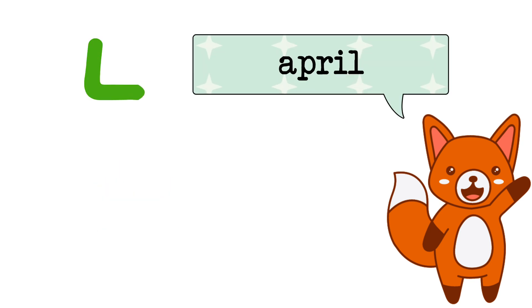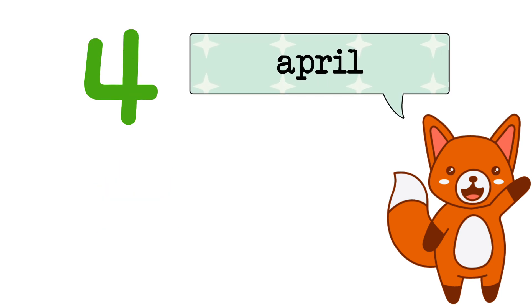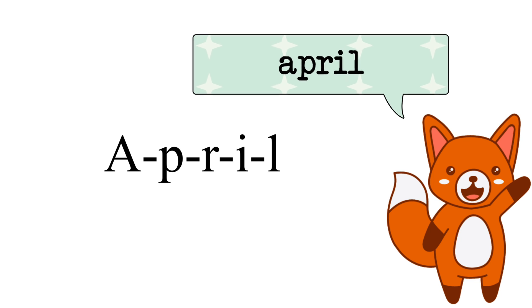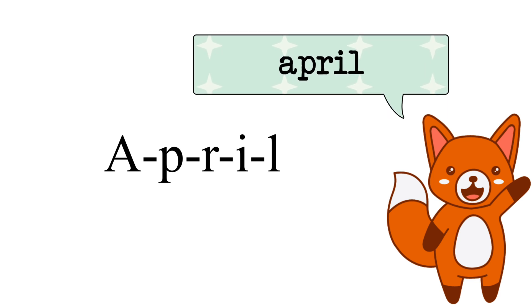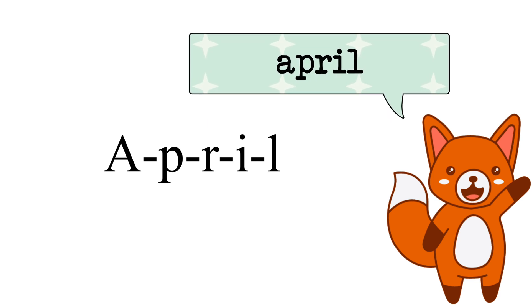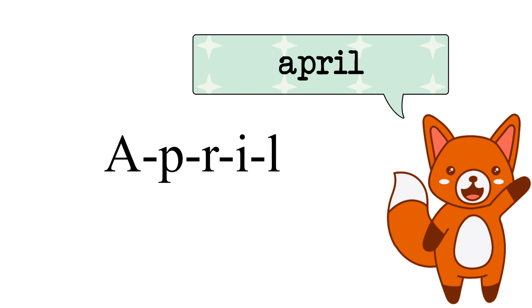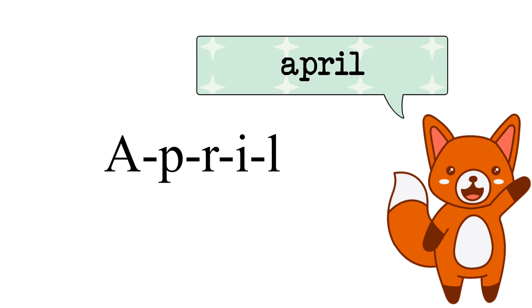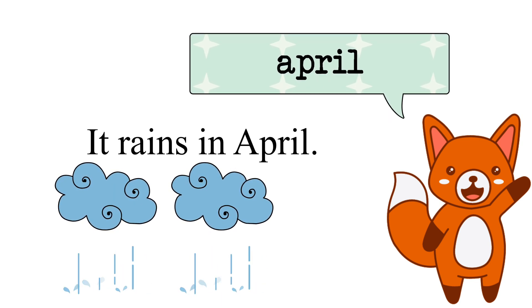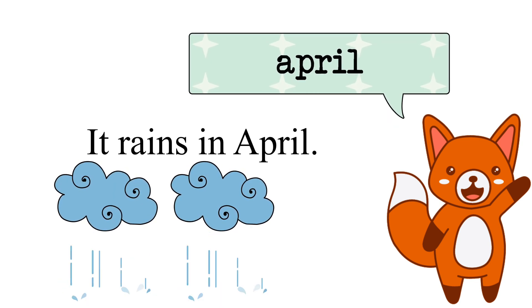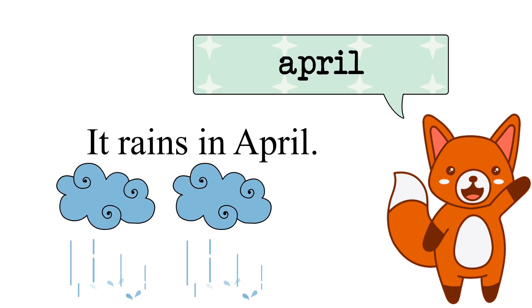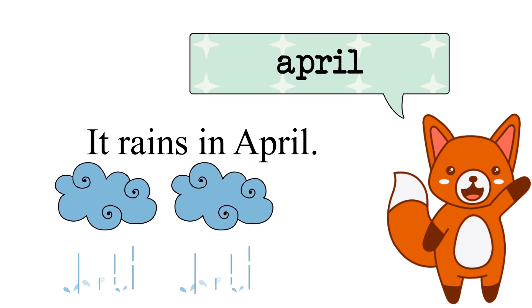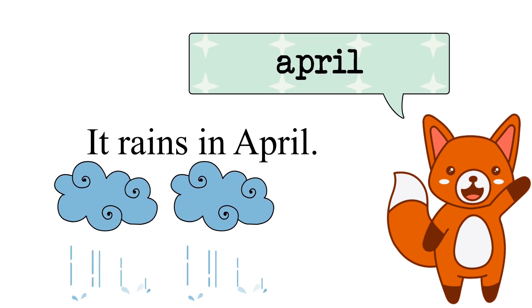The fourth month is April. A, P, R, I, L. April. It rains in April. Does it rain in April? Yes, it does.